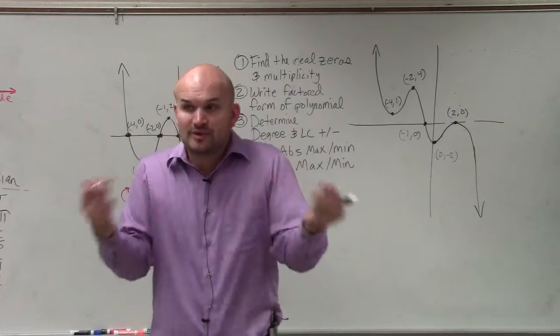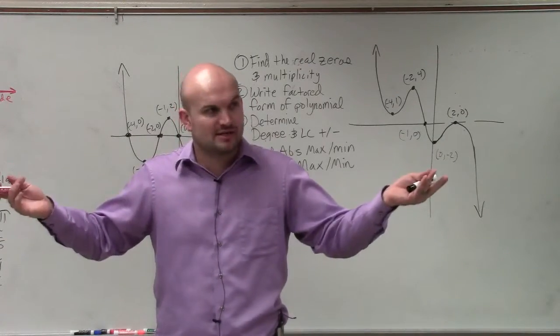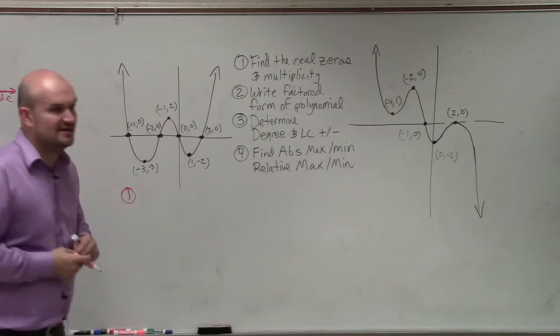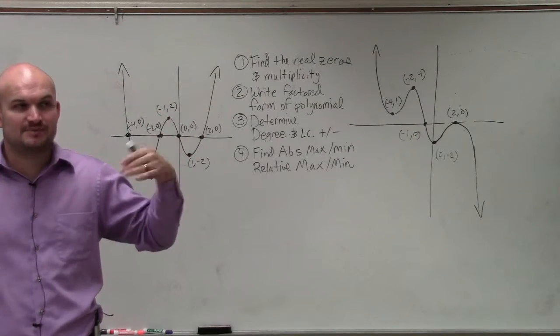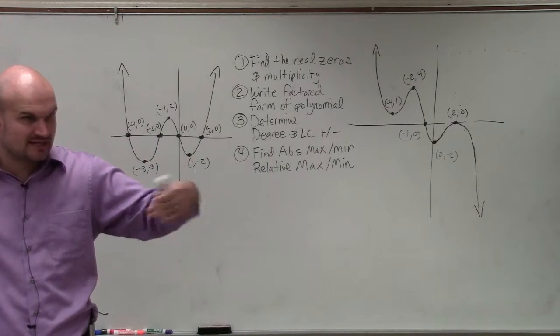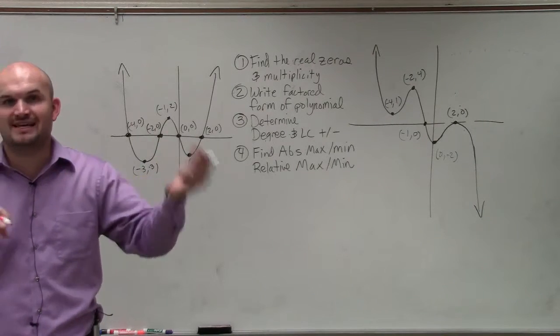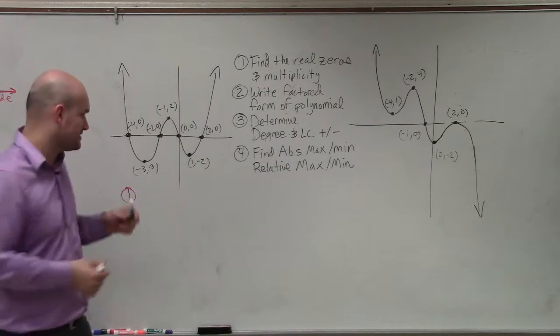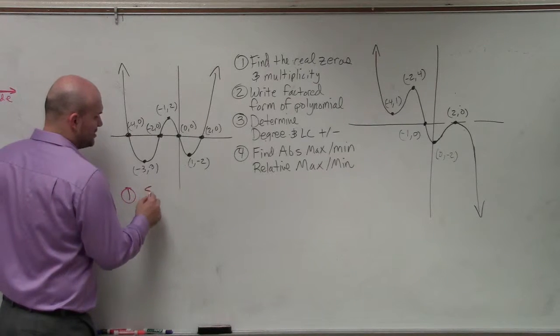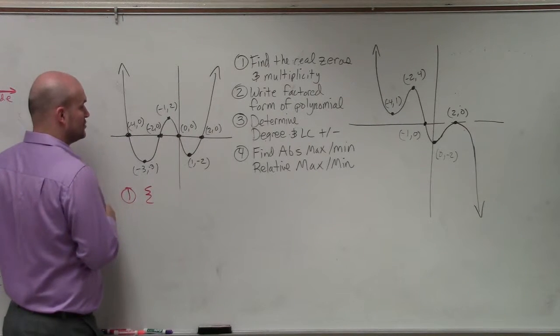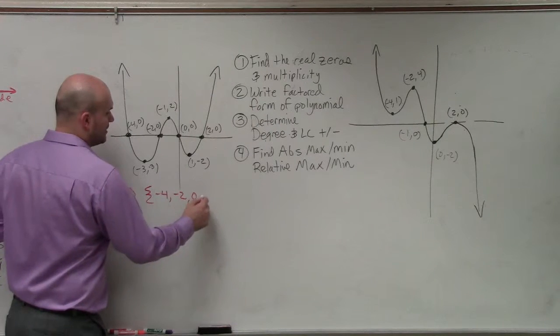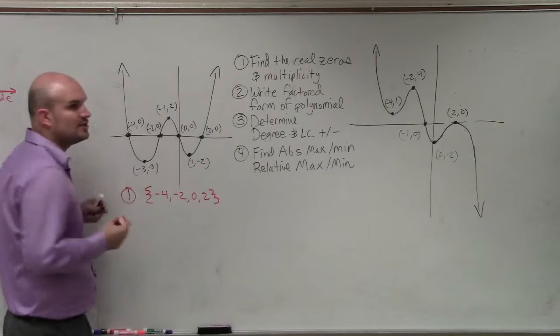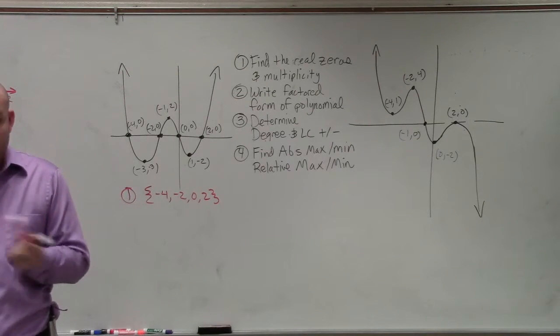Well, we know the real zeros are represented on a graph by their x-intercepts. And then I asked you to understand their multiplicity. So if we know the zeros, I'm just going to put them in a solution set: negative 4, negative 2, 0, and 2. The real zeros are the x-intercepts, that's it.